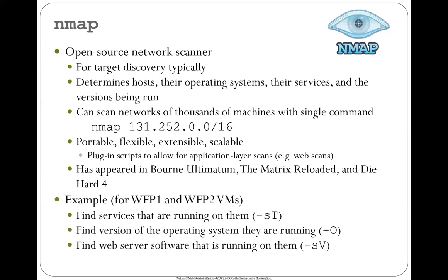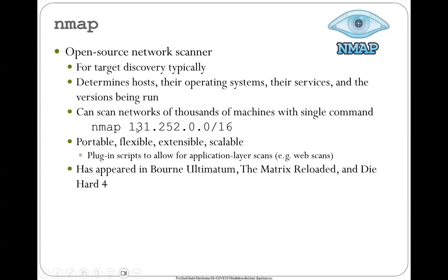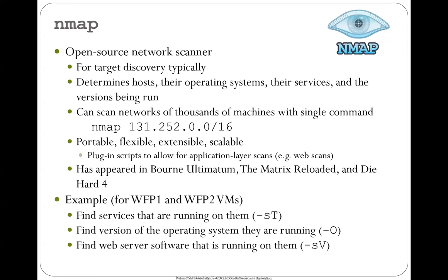For example: find all the machines that are up at Portland State — just do an Nmap on the Portland State prefix and Nmap scans all the machines in this university. This thing is so popular it's appeared in movies, and the screenwriters have actually done a good job representing what the tool does. What I'm going to have you do is use natural language to see if you can get the LLM agent to execute the proper Nmap scans — for example, find all of the services running on the Web for Pentester 1 VM.